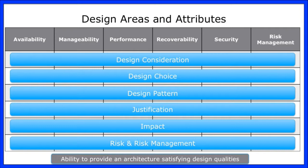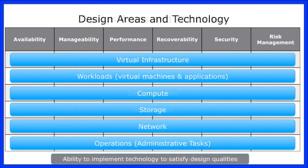We've got two matrices I'm going to show you. On the vBrownBag site, you can get a longer version of what I'm covering here — you can actually download that. The idea is we have several attributes that we look at across availability, manageability, performance, recoverability, security, and risk management. Here we're showing design considerations, choices, and patterns, and on the next slide we're showing the actual choice of technical capabilities or specific technologies.